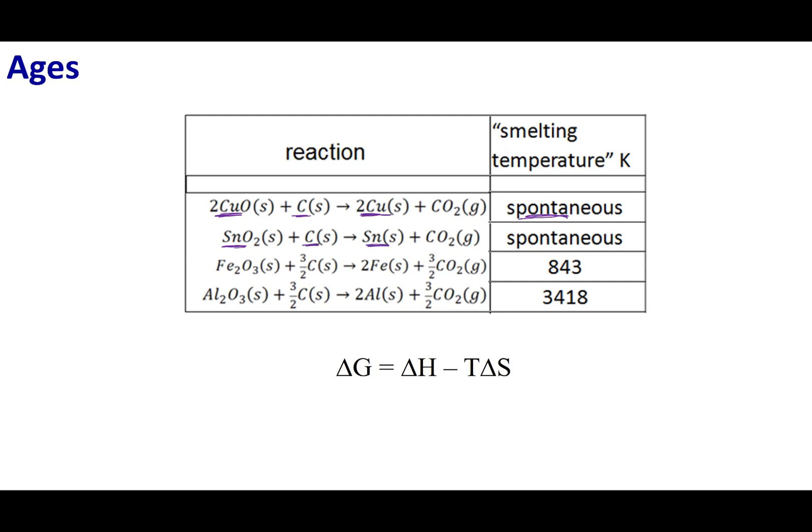A little bit later, what humans figured out is if we add a little bit of tin ore, we can go ahead and put our carbon in, and we can smelt tin out. Now copper plus tin, well that gets us bronze, and this gets us our Bronze Age. And again, we can do this spontaneously in a campfire.